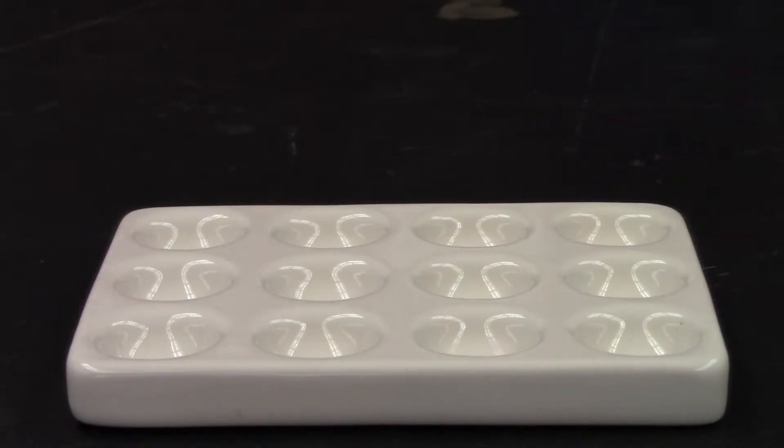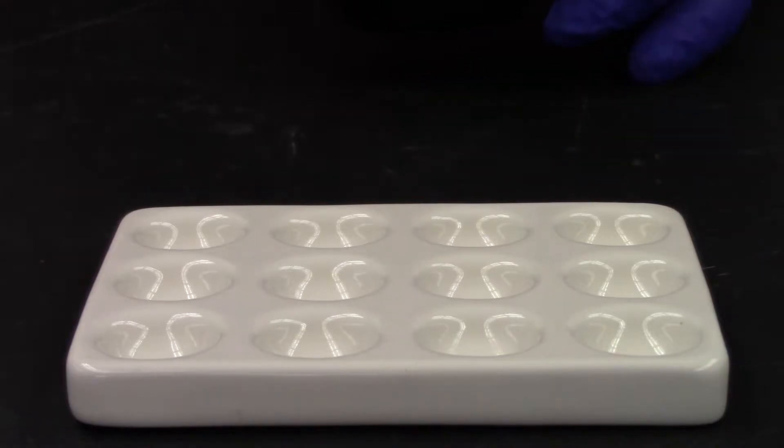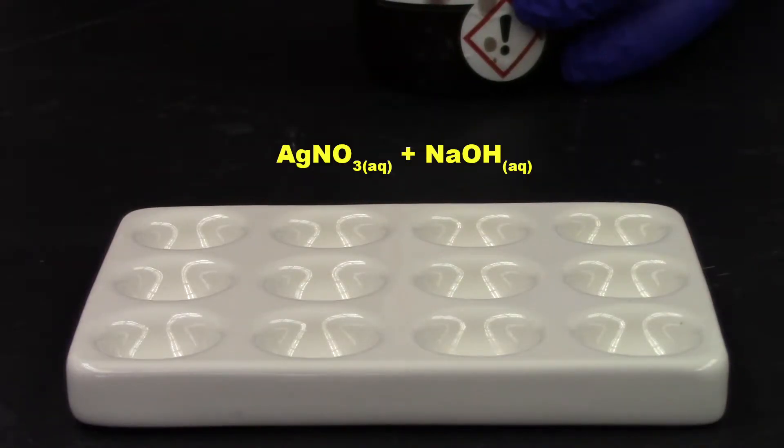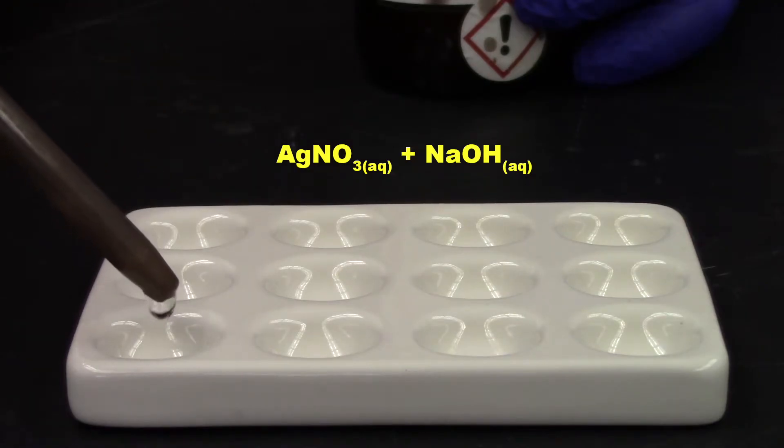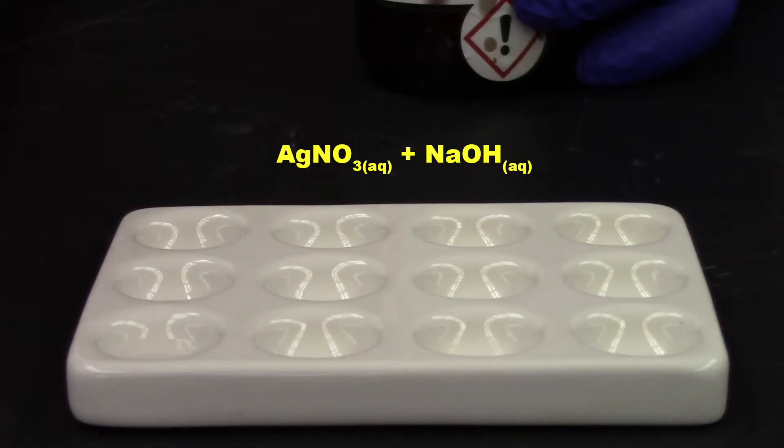In part two, we're going to do a whole bunch of different chemical reactions. So the first reaction we want to do is we want to mix in some sodium hydroxide with a little bit of silver nitrate. All right. So let's add the silver nitrate first. Take five drops of that. Put it into this well.